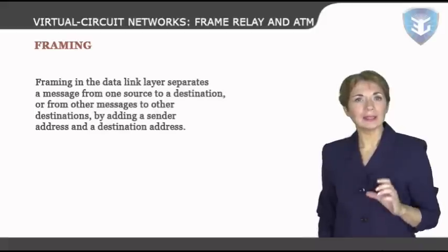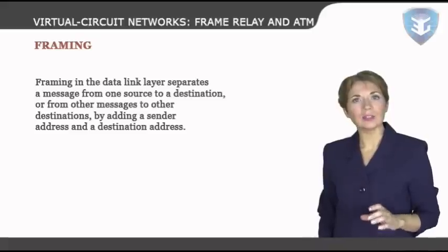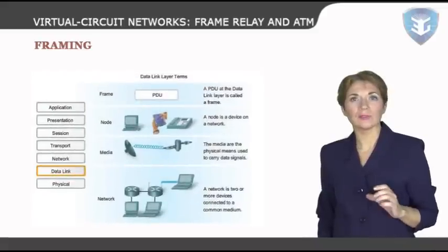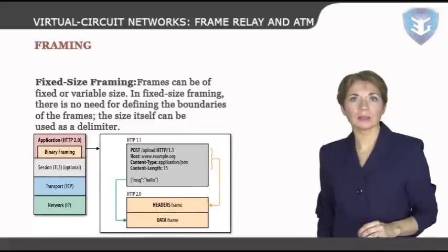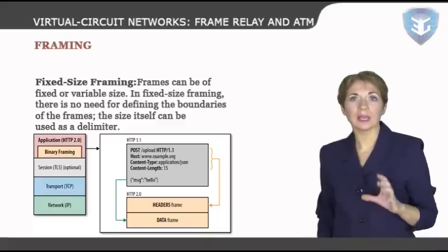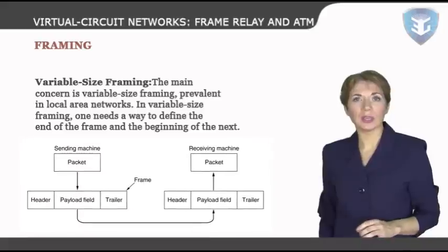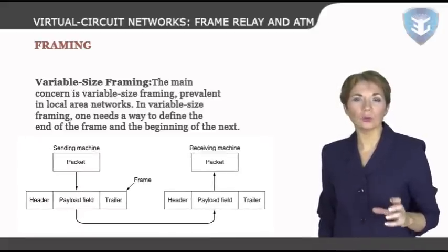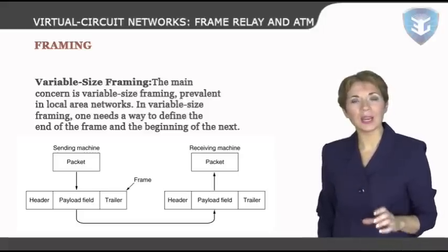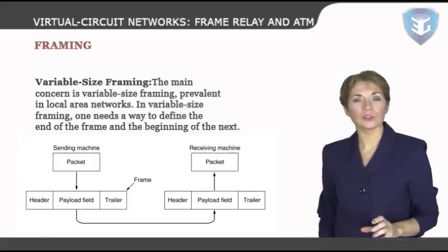Framing: framing in the data link layer separates a message from one source to a destination from other messages by adding a sender address and a destination address. The destination address defines where the packet is to go; the sender address helps the recipient acknowledge the receipt. Fixed size framing: in fixed size framing, there is no need for defining the boundaries of the frames — the size itself can be used as a delimiter. An example is the ATM wide area network, which uses frames of fixed size called cells. Variable size framing: in variable size framing, one needs a way to define the end of the frame and the beginning of the next. Historically, two approaches were used: a character-oriented approach and a bit-oriented approach.